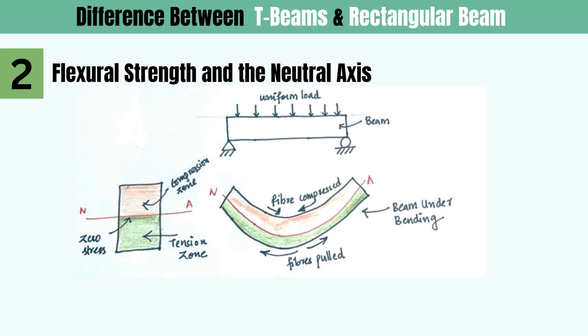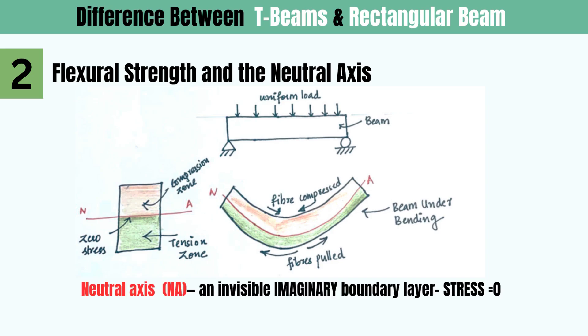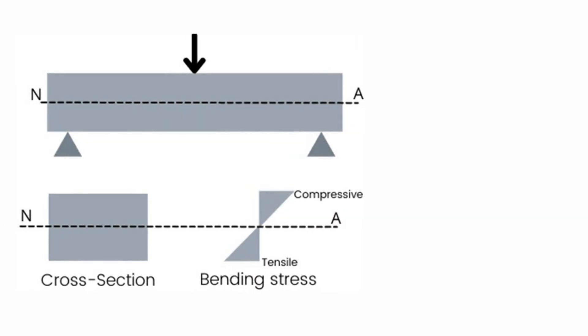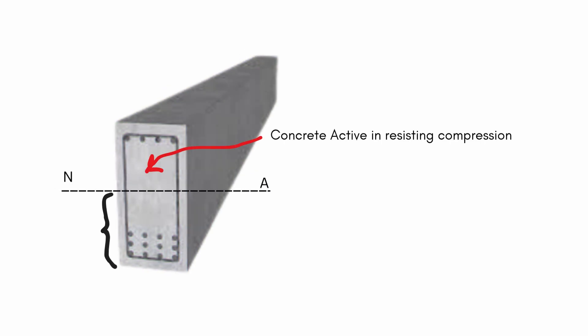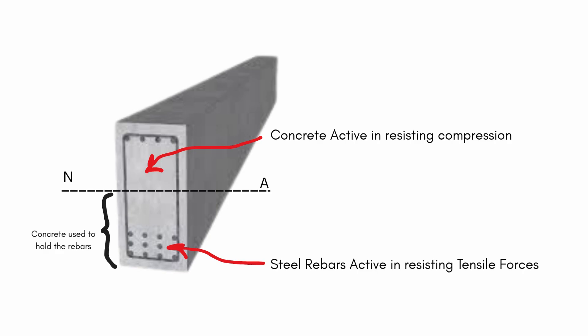There is an imaginary line that separates these two portions, and this line is what we call the neutral axis, where there is neither compressive stress nor tensile stress — where the stress is equal to zero. Only the concrete above the neutral axis resists compressive stress. Below it, steel reinforcement handles the tension, as concrete is weak in tension. Ideally, the concrete below the neutral axis — in the tensile area — doesn't have any role in resisting tensile stress; it serves the purpose of holding the reinforcement bar in the beam.